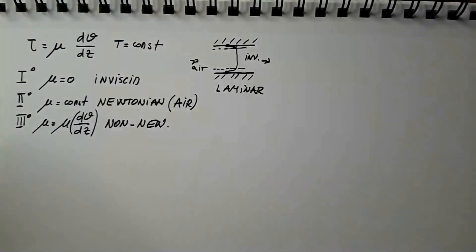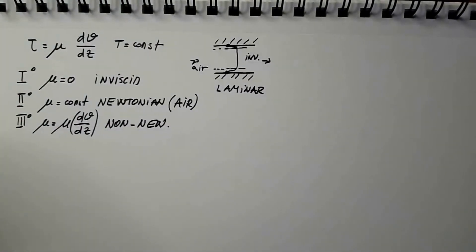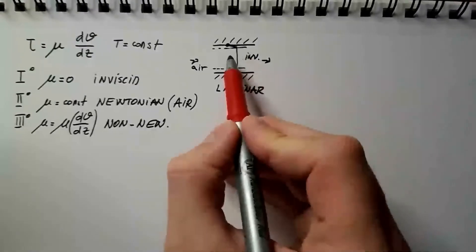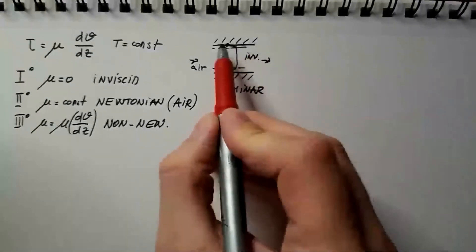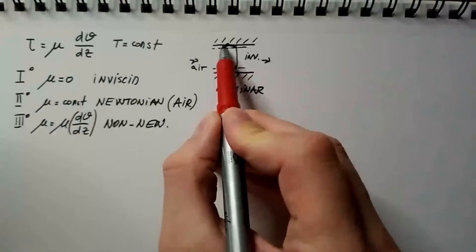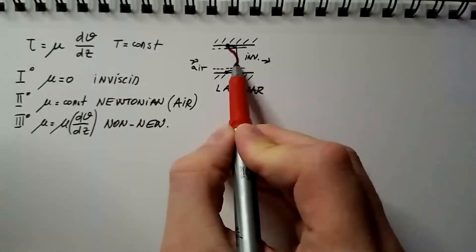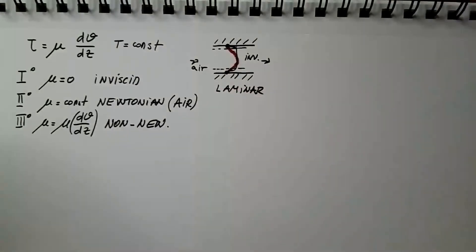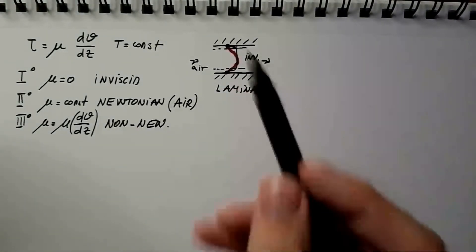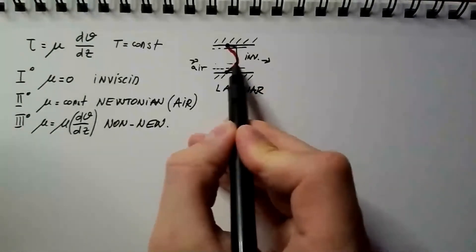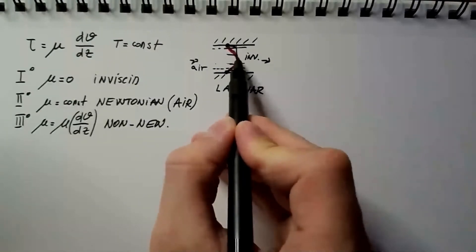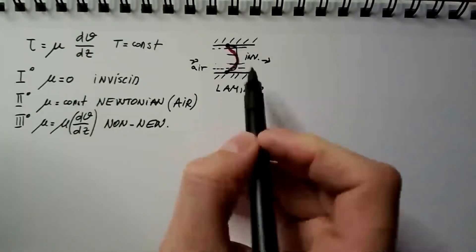I hope you understand that this profile changes if we have different fluid. If this was, for example, oil, perhaps, then this gradient would be less steep and maybe we would have something like this. Which means that the inviscid assumption is really valid only in this region in the case of more viscous fluids such as oil.